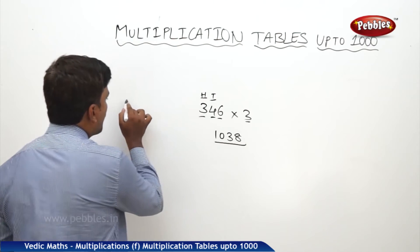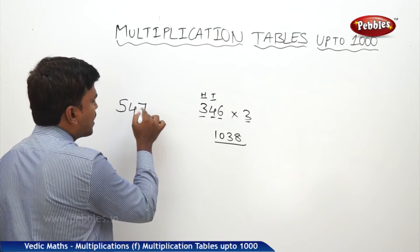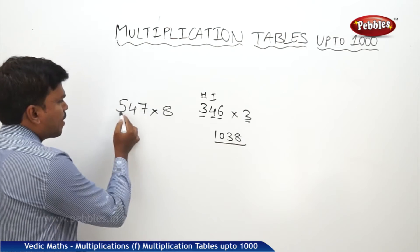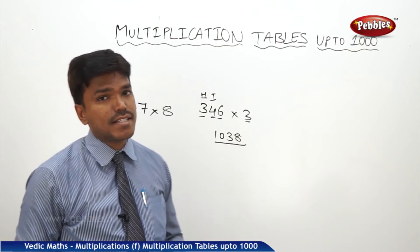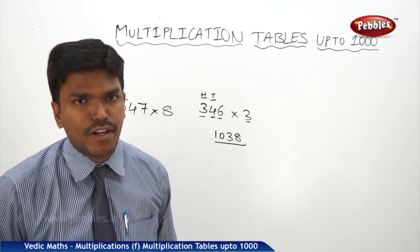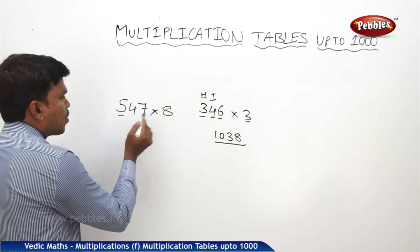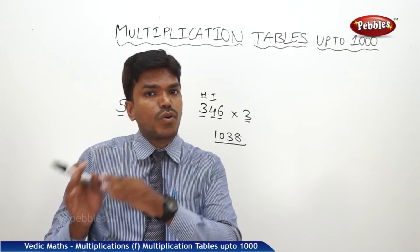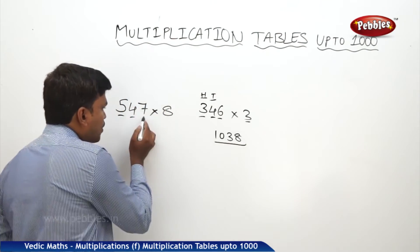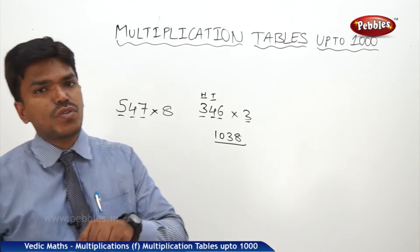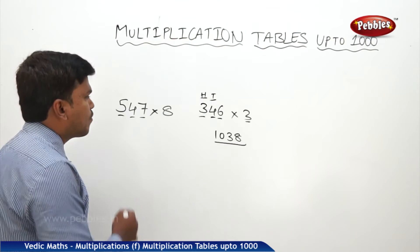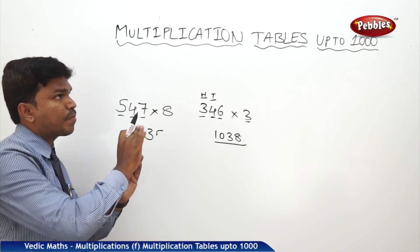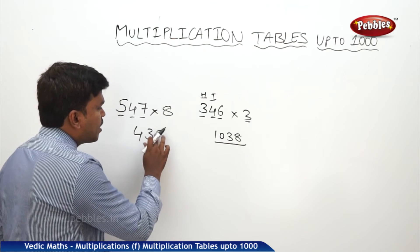One more example. I want to calculate 547 eight times. What is eight fives? 40, but take it as forty hundreds. Forty hundred is nothing but four thousand. Keep in the mind. Now what is eight fours? 32, take it as 320. 4000 plus 320. 4000 plus 320 plus 56. 4000, 320 plus 56, how much? It is 4376.